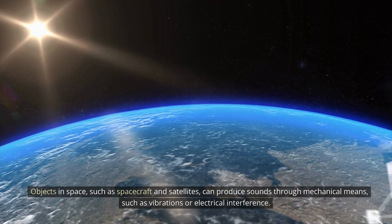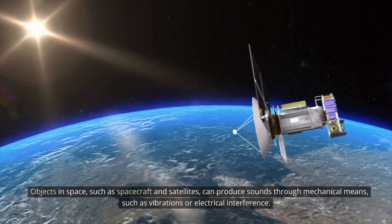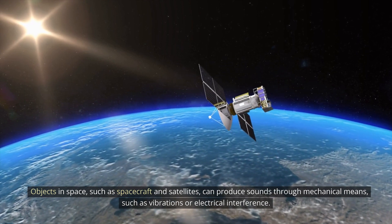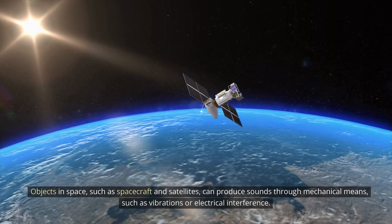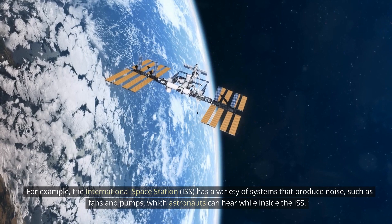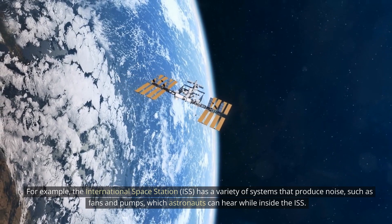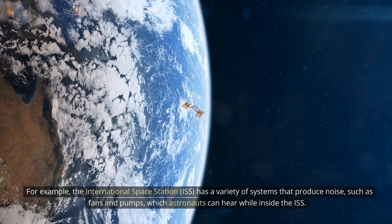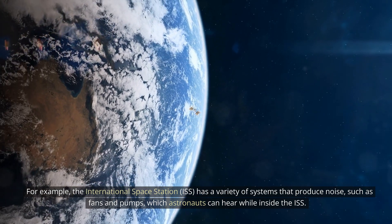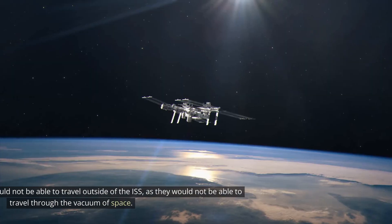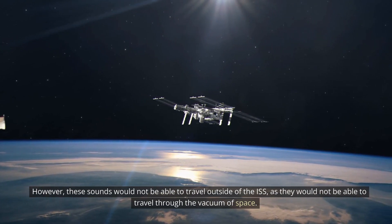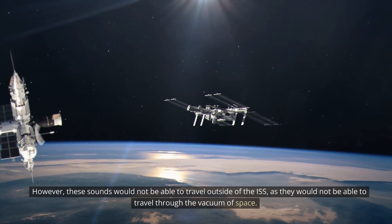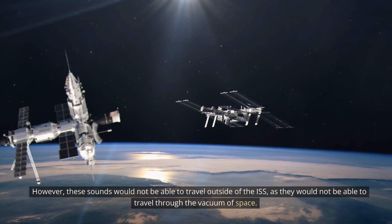Objects in space, such as spacecraft and satellites, can produce sounds through mechanical means, such as vibrations or electrical interference. For example, the International Space Station (ISS) has a variety of systems that produce noise, such as fans and pumps, which astronauts can hear while inside the ISS. However, these sounds would not be able to travel outside of the ISS, as they would not be able to travel through the vacuum of space.